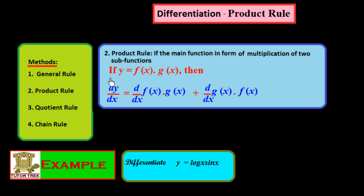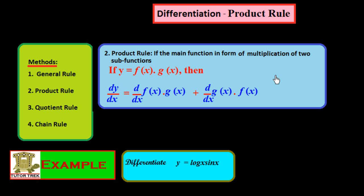If we have a function y equal to f(x) into g(x), here y is the main function and f(x) and g(x) are sub-functions. According to the product rule, we differentiate the first function and keep the second function as it is, and take their product. Then we add the differentiation of the second function multiplied by the first function as it is — we take the summation of both. In this way we can find the differentiation of a function which is the product of two sub-functions.